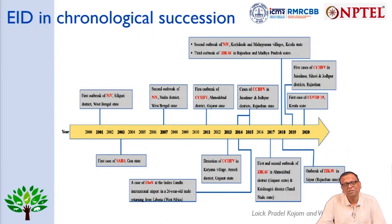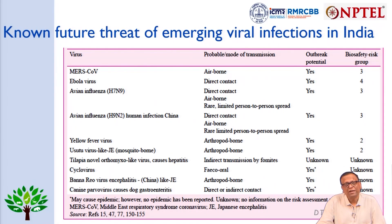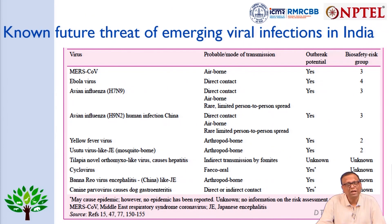This shows emerging infectious diseases in India in chronological succession from the year 2000, presented as timelines. Another slide shows the known threats of emerging viral infections in the country: MERS-CoV is airborne with extremely high outbreak potential; Ebola virus spreads through direct contact with outbreak potential; avian influenza, yellow fever, and various other diseases are listed — for some at the bottom the outbreak potential and biosafety risk group are unknown.